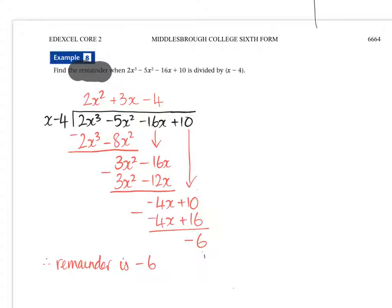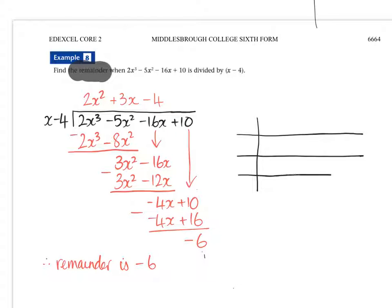Now, how does that work out when we do it on the grid method? Well, again, a quadratic is going to be the answer when we're doing a cubic divided by a linear.